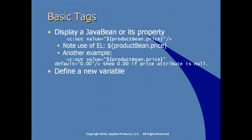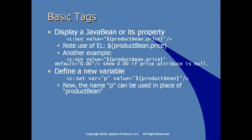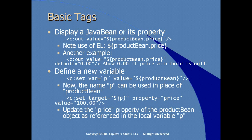To define a new variable, there is a set tag in the core tag library. You set up variables and initialize them because you want to use them repeatedly. In this example, we create a local variable called p and set its value to the product bean object. The name p can then be used locally within the JSP in place of the full product bean instance name. Another use of the set tag with a target lets you set property values on existing variables — here updating the price property of the product bean via the local variable p.